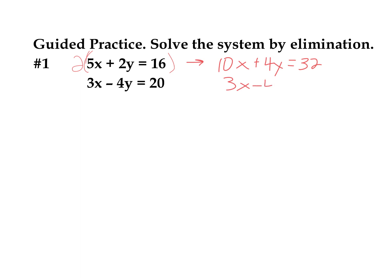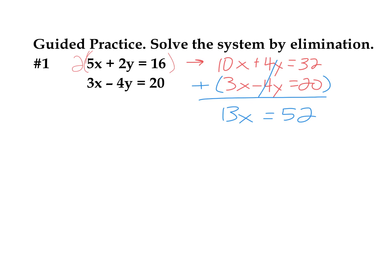In the second equation, we don't need to change it at all, so we're going to keep 3x minus 4y equals 20. Now I can see that I have 4y and minus 4y that, if I add together, will eliminate. So I'm going to get 10 plus 3, which is 13x. The 4y plus negative 4y cancels, and that equals 52. So I have 13x equals 52. Now I can divide both sides by 13 to solve for x. X equals 4.